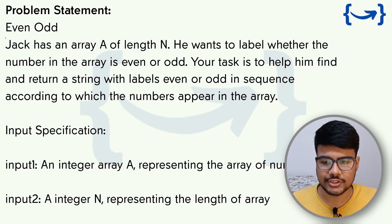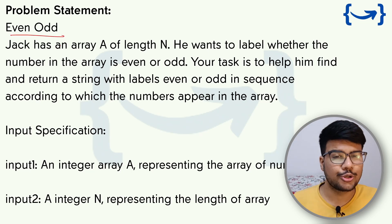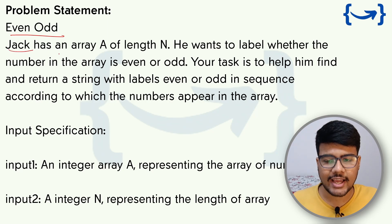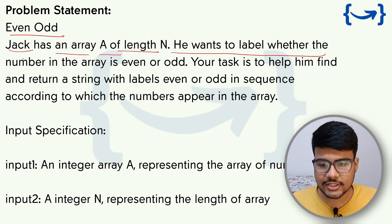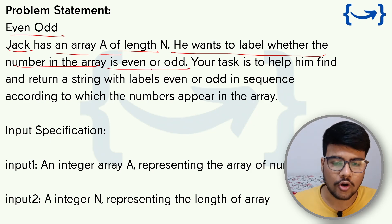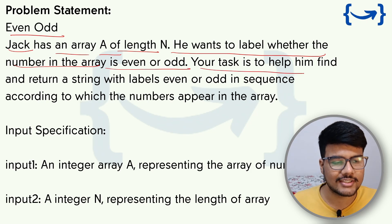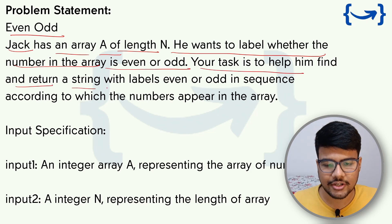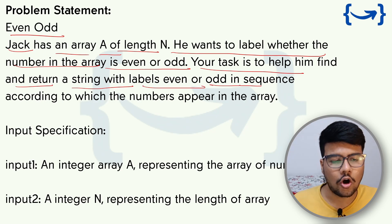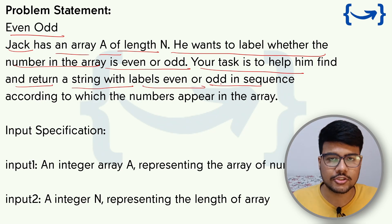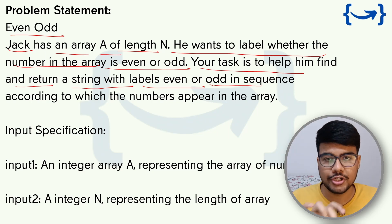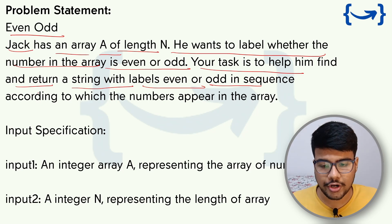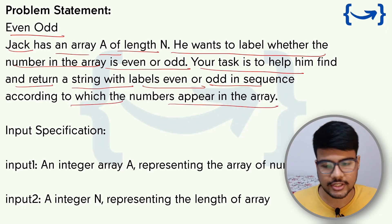The first problem is 'Even Odd.' This question is very easy. Jack has an array A of length N and wants to label whether each number in the array is even or odd. Your task is to help him find and return a string with labels 'even' or 'odd' in sequence, according to which the numbers appear in the array.